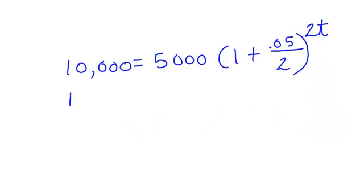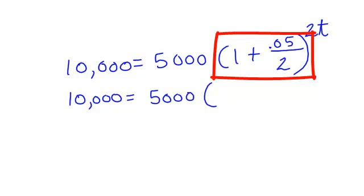So I do have 10,000 equals 5,000. Now, to simplify this a bit, I'm going to go ahead and do this in the calculator. 1 plus .05 divided by 2. That will be 1.025.